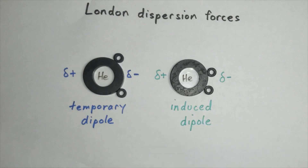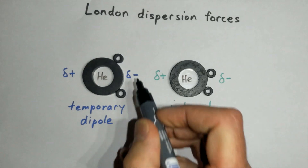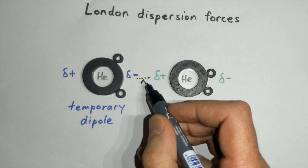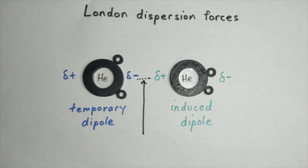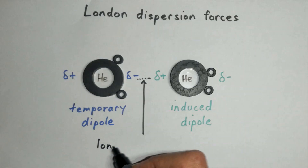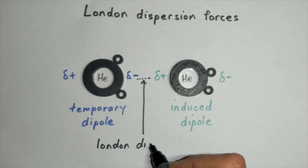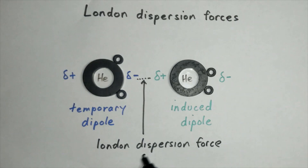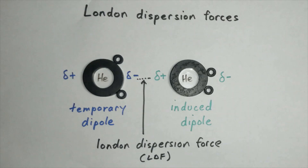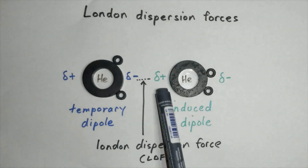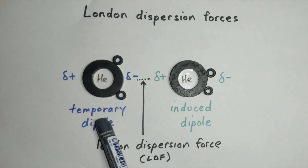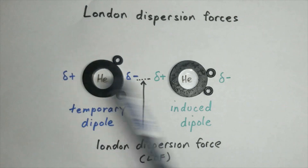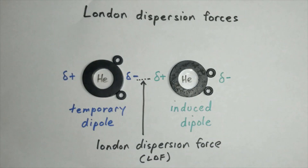We now have an electrostatic attraction between the two atoms. This electrostatic attraction between the two atoms, caused by a temporary dipole and an induced dipole, we refer to as a London dispersion force — sometimes abbreviated to LDF. To summarize, London dispersion forces are formed as a result of electrostatic attraction between temporary dipoles and induced dipoles caused by the movement of electrons in atoms and molecules.